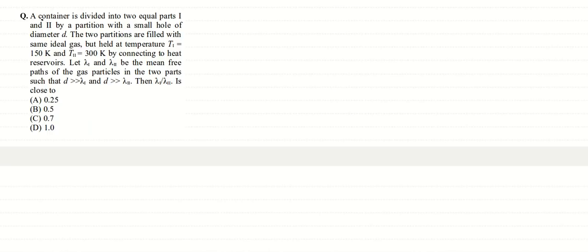In this question, we are given a container divided into two equal parts, 1 and 2, by a partition with a small hole of diameter d. The two partitions are filled with the same ideal gas but held at temperatures T1 and T2 by connecting to heat reservoirs. There are different temperatures of the